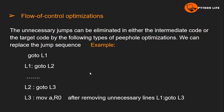The next characteristic is flow of control optimization. Flow of control optimization means control is transferred from one place of the program to another place. By using flow of control optimization, unnecessary jumps can be eliminated. The unnecessary jumps can be eliminated in either the intermediate code or the target code. We can replace jump sequences and remove redundant labels.